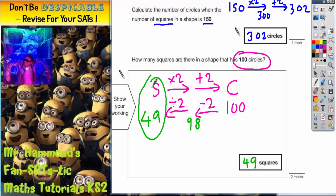It's a good idea just to check with this 49 that it works into the original formula. Well, if there were 49 squares, 49 times two would be 98. And 98 add two would be 100, which would get us back to 100. So it works.